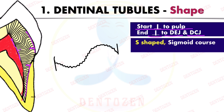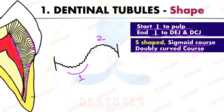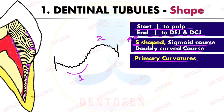The S-shaped course is also called a sigmoid course. These S-shaped tubules have two curves, so it is also called a doubly curved course — that can be an important exam question. The shape is S-shaped, and these two curvatures are called primary curvatures of the dentinal tubule.